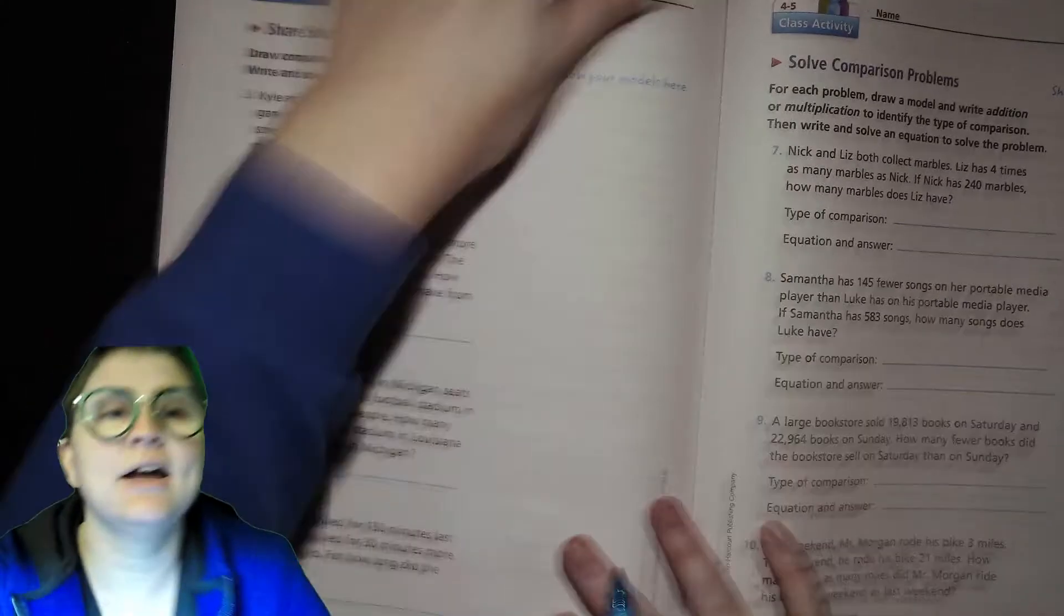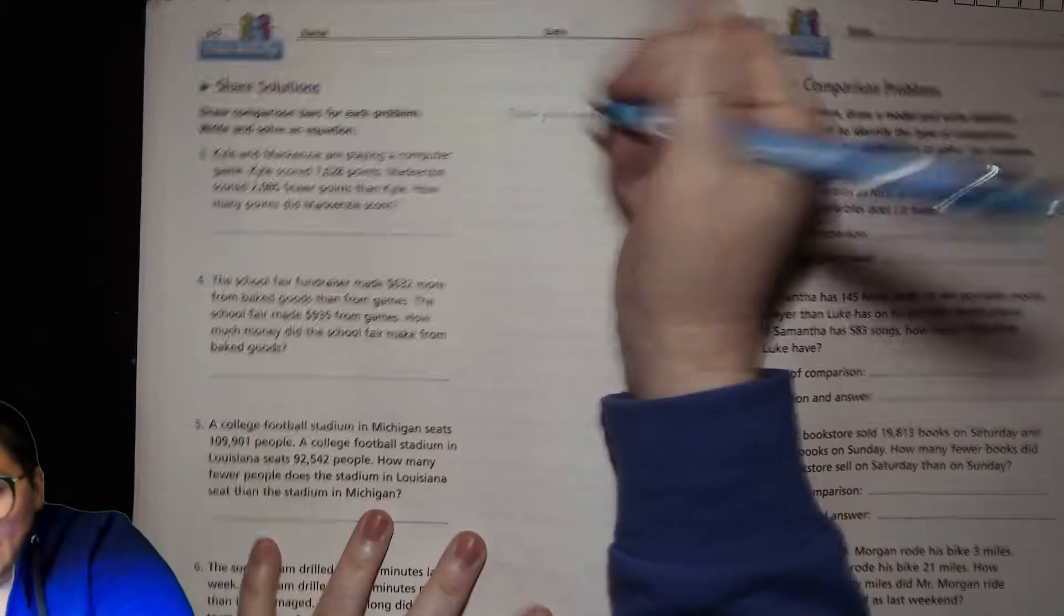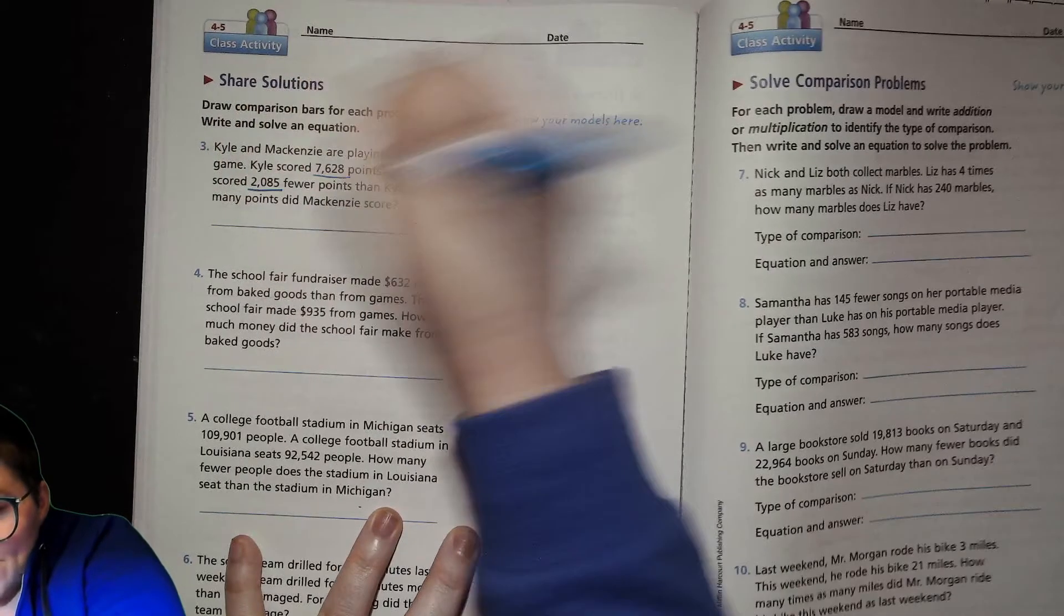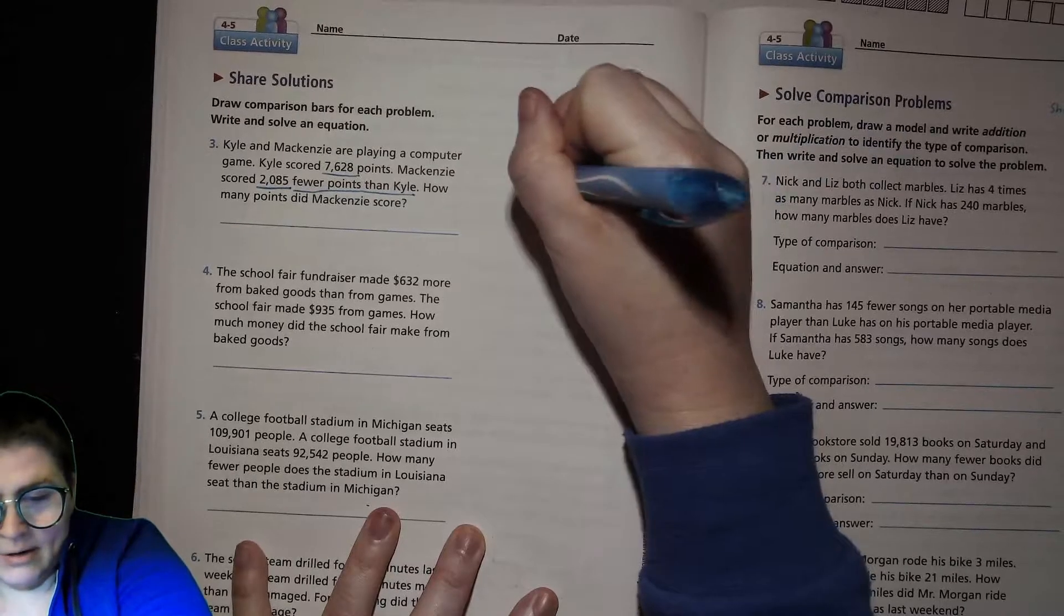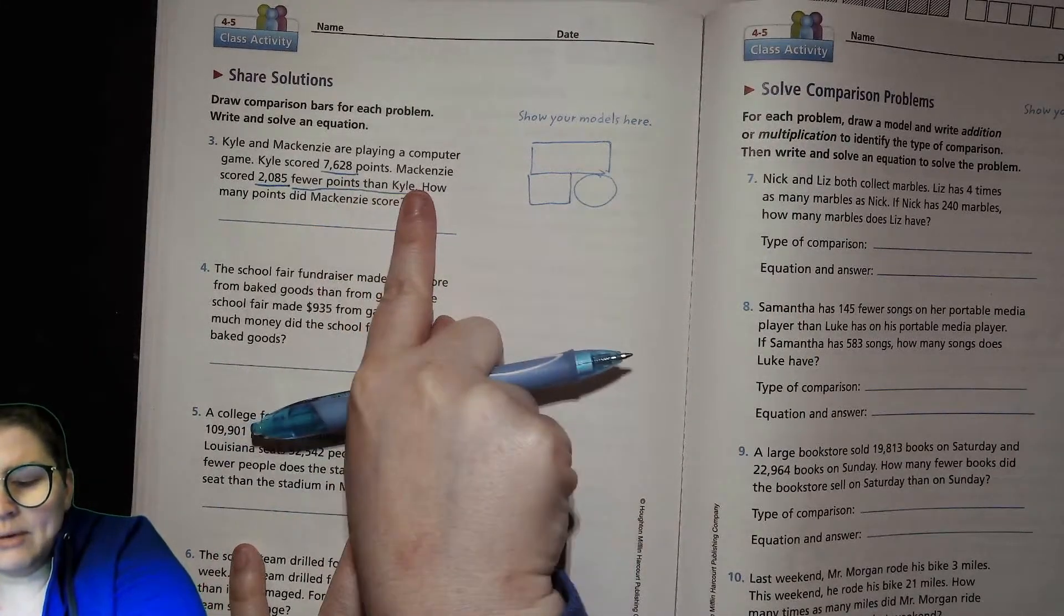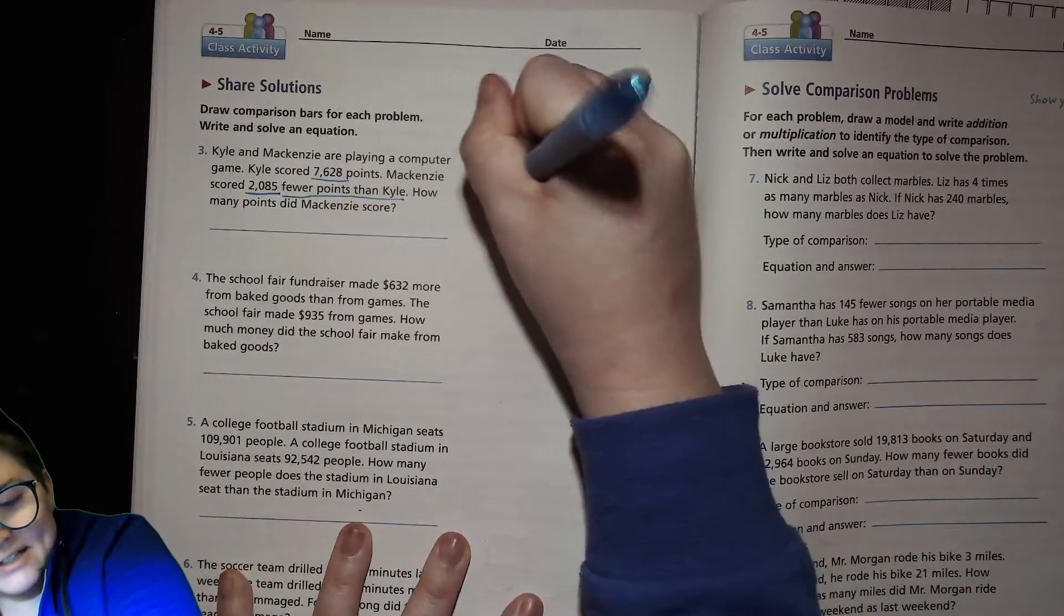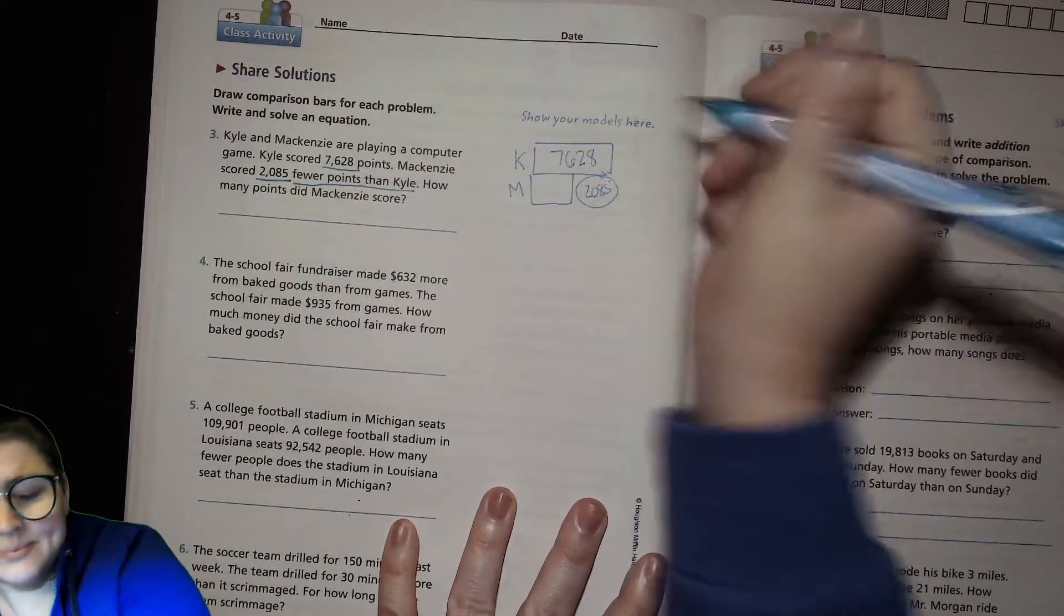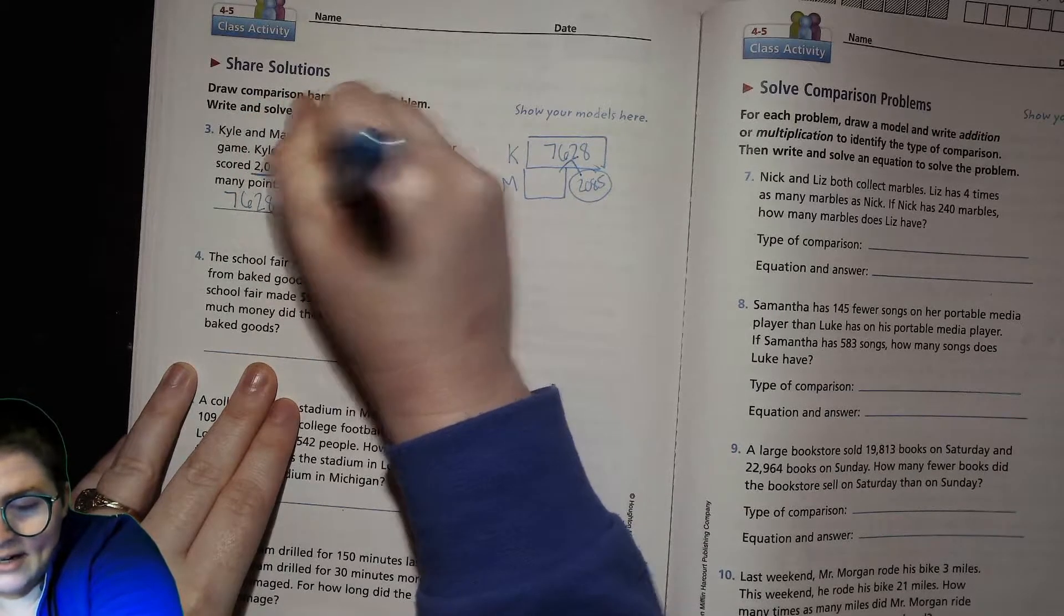Now we're gonna skip ahead and do number 3. Kyle and Mackenzie are playing a computer game. Kyle scored 7,628 and Mackenzie scored 2,085 fewer points than Kyle. So that's not the amount that she scored - that is simply the difference. I'm gonna make my model. Here's an important thing: we know how much Kyle did. We don't know exactly what Mackenzie scored, but we know she scored some amount fewer or less than what Kyle did, which means Kyle did more. Kyle gets the big bar, Mackenzie gets the little bar, but we don't know what it is. The difference is 2,085 and Kyle's amount was 7,628.